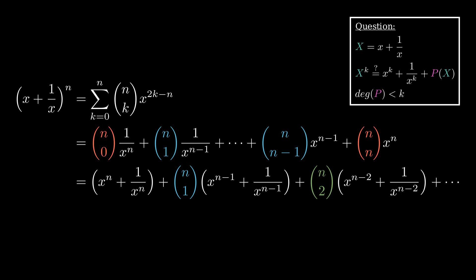The first part of the result is exactly what we want. And the second part is written in terms of smaller powers of big X, which in turn are also going to be written in terms of smaller powers, and so on.